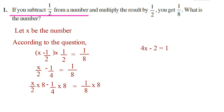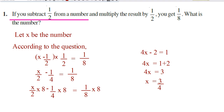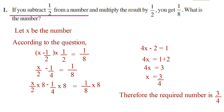We get 4x minus 2 is equal to 1. Now transpose 2 to the other side: 4x is equal to 1 plus 2, that is 4x is equal to 3, that is x is equal to 3/4. We want to find the number, so we conclude: therefore, the required number is 3/4.